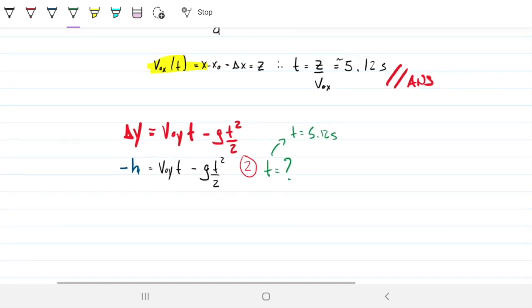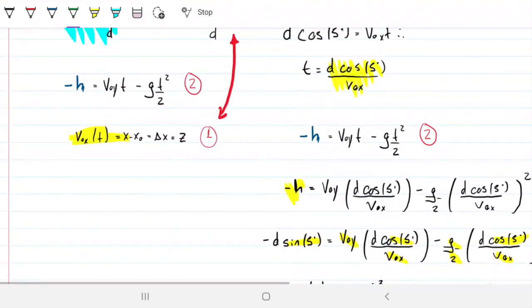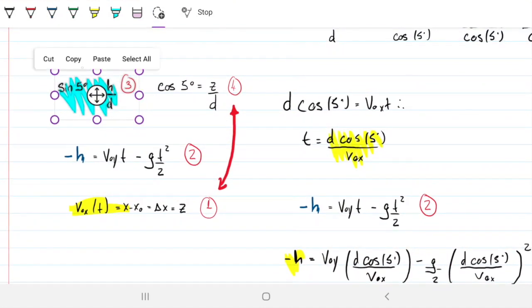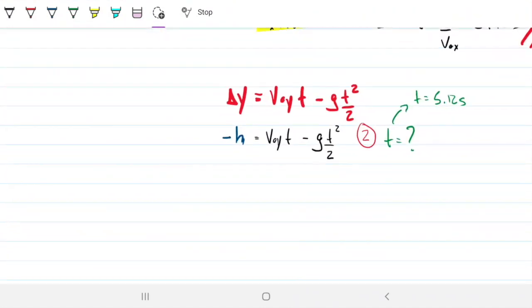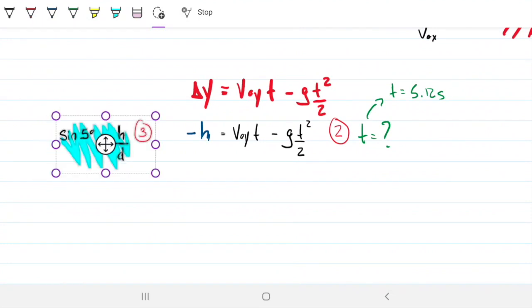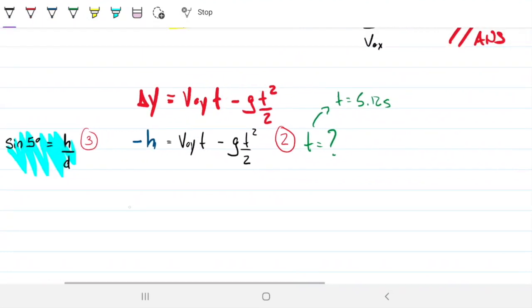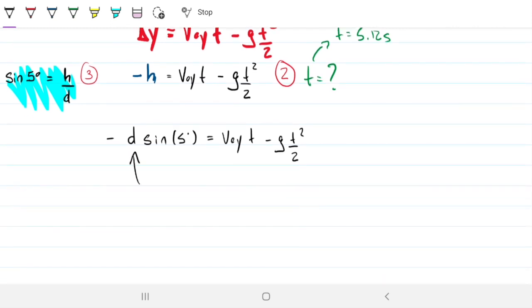All right, so I'll need h and I know that h can be found by relating this. So this is t times sine of 5 negative which equals VOY t minus g t squared. So I can substitute in all the values that I have. This is 232.7 sine of 5, this was 21.13, this is 9.81.